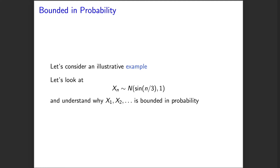Let's consider an illustrative example of a sequence that is bounded in probability. We'll look at a sequence of Gaussian random variables all with variance one, but with a mean that changes in n. The mean of the random variable xn is going to be the sine of n over three, and as n increases this will fluctuate back and forth between one and negative one — it will never exceed one and never get more negative than negative one. Visually, this sequence is well-contained and doesn't have mass shooting off to plus or minus infinity.